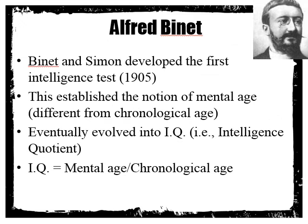Based on this research, Binet and Simon developed the first intelligence test in 1905. This established the notion of mental age, which is differentiated from chronological age. Your chronological age is just how old you are, while mental age is about how much knowledge, skills, and abilities you have relative to your chronological age — are you advanced or slightly behind the curve? This idea about mental age eventually evolved into what we now call IQ, or intelligence quotient, which theoretically is mental age divided by chronological age — how advanced are you relative to your actual chronological age?